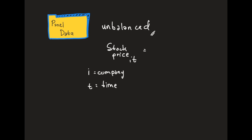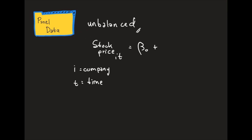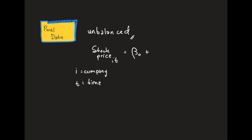For example, we want to see the stock price of a company using some model: stock price equals a constant B0 plus beta1 times investment for company i at time t, plus some error term.